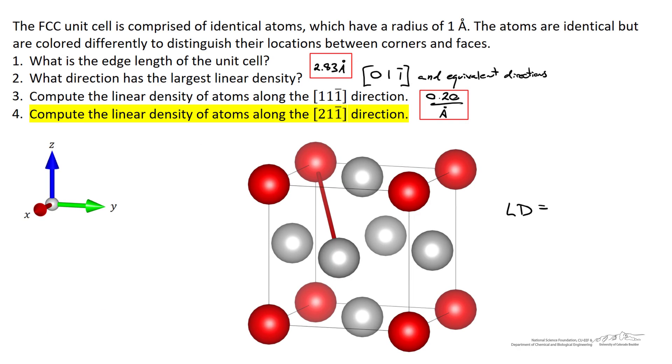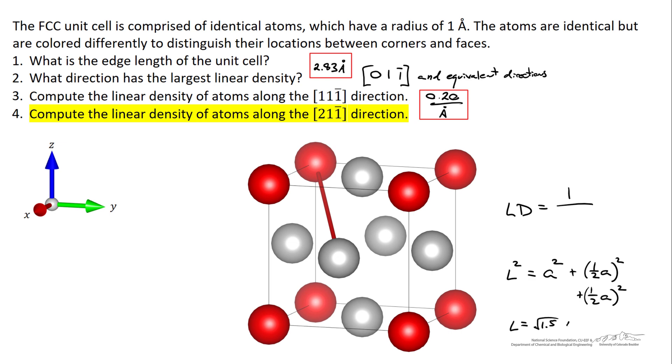And the square of the length of that line, by way of Pythagorean's theorem, is going to be equal to a squared, based on the x direction, plus 1 half a squared on the y direction, plus another 1 half a squared in the z direction. This means the length of the line is going to be equal to the square root of 1.5 multiplied by 2.83 angstroms, which is equal to 3.47 angstroms. In the linear density, then, we've got 1 atom divided by 3.47 angstroms, which is equal to a linear density of 0.29 atoms per angstrom.